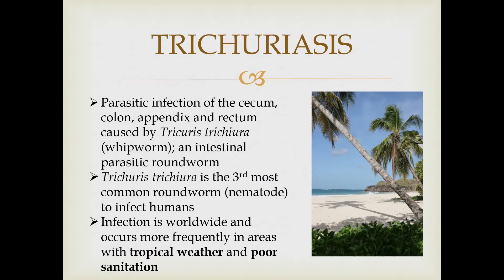Trichuriasis is basically a parasitic infection that is caused by a whipworm, which is fairly distinguishable on account of it having a whip-like architecture. The parasite is better known as Trichuris trichiura and it is especially prevalent in areas of poor sanitation and hygiene, as well as those countries which have tropical climates.